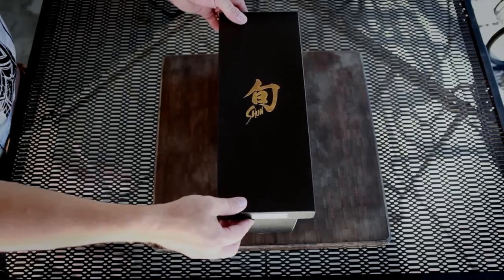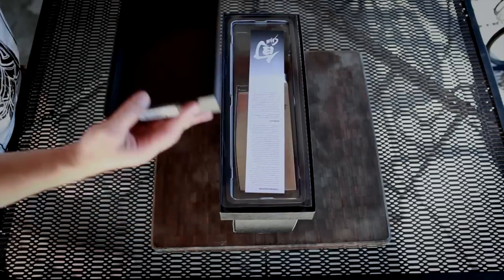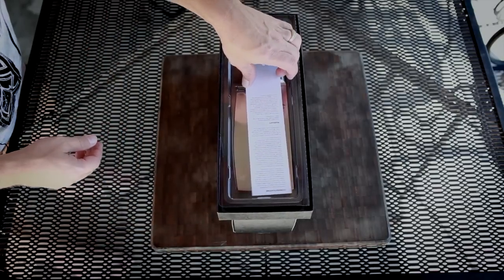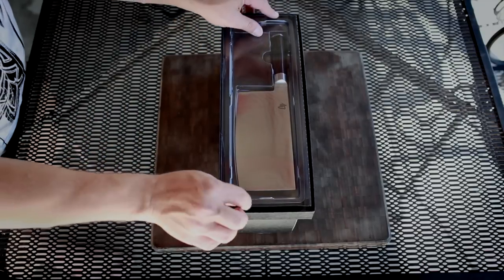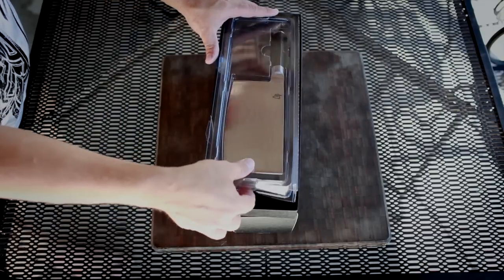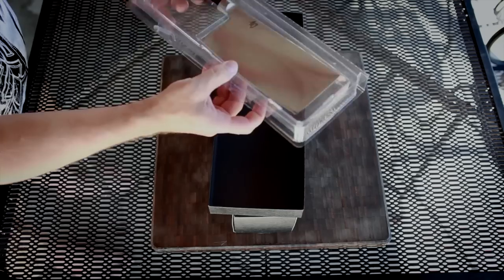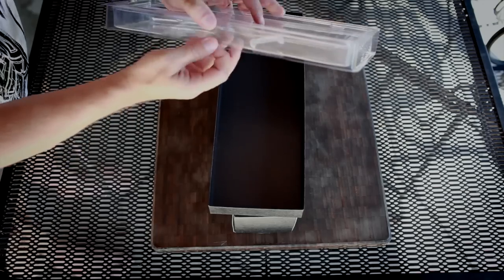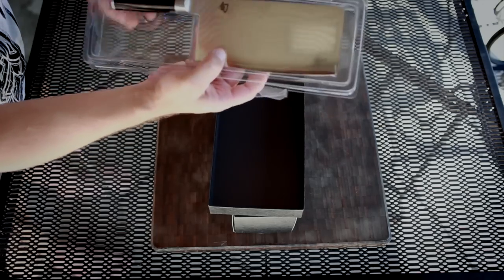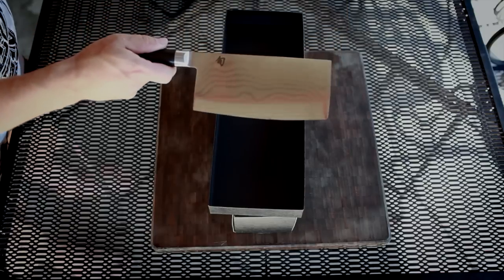First I'm going to open up the cleaver. Most people think of a cleaver to chop up meat or break bones, but the Japanese use them to cut cabbage and things like that, so they have a vegetable cleaver made for cutting vegetables. As you can see here it's a 7-inch vegetable cleaver.